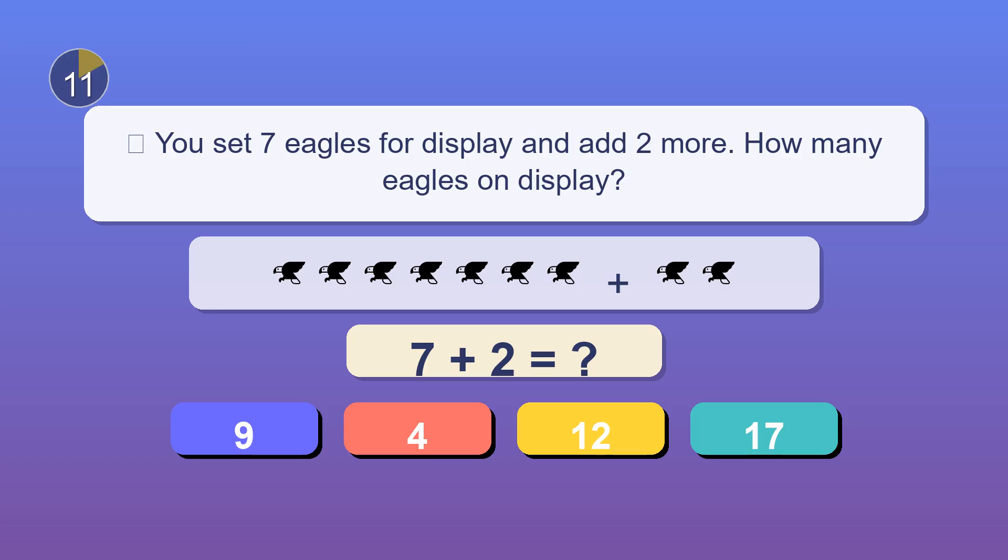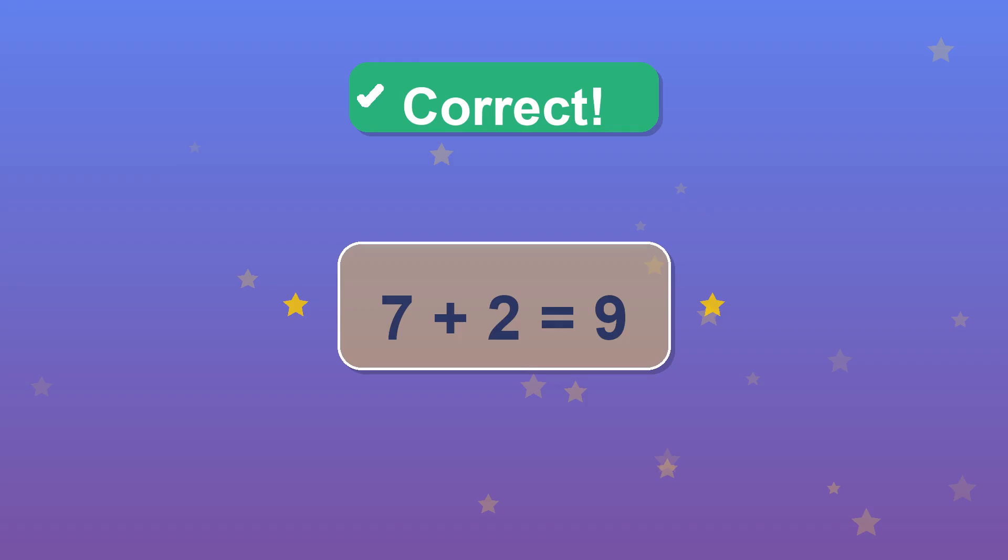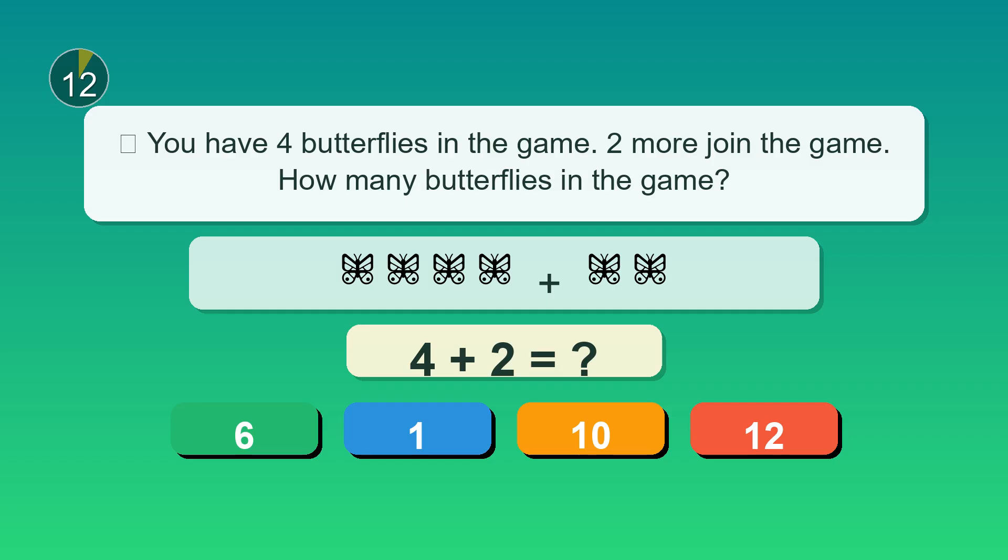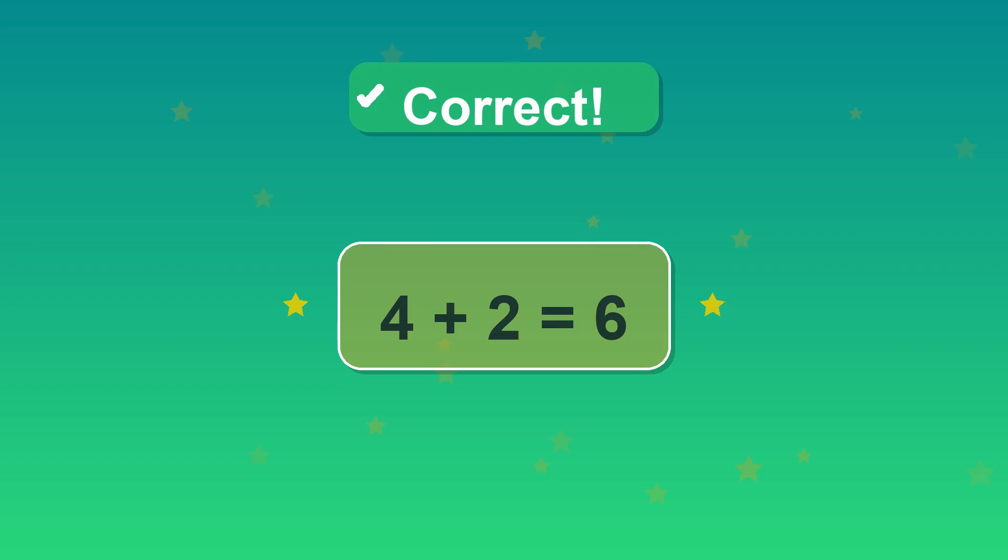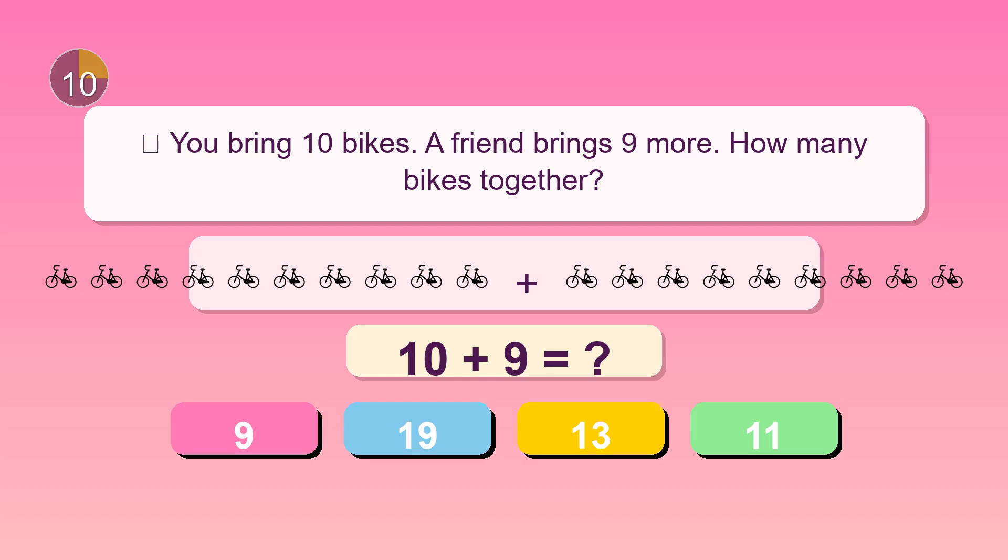You set seven eagles for display and add two more. How many eagles on display? 9. Great thinking. You have four butterflies in the game. Two more join the game. How many butterflies in the game? 6. Stellar. You bring ten bikes. A friend brings nine more. How many bikes together? 19.